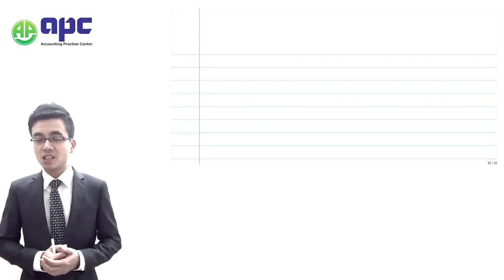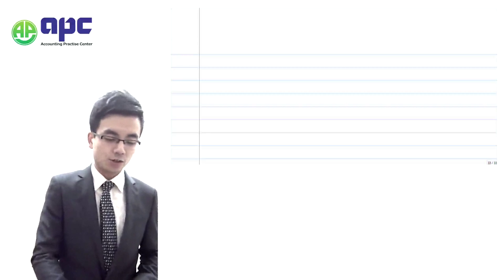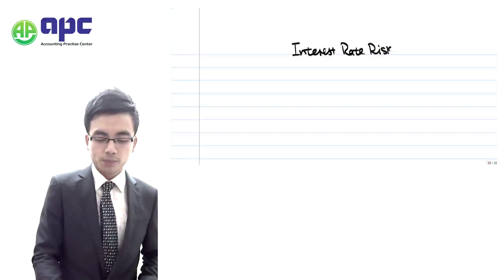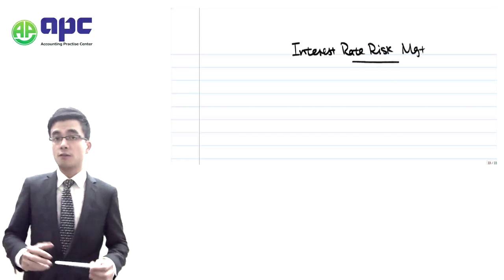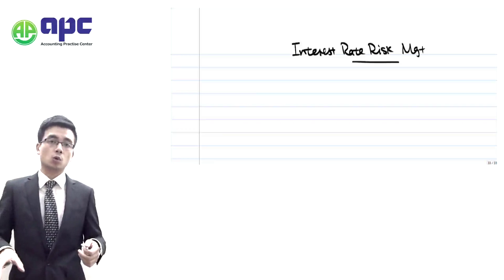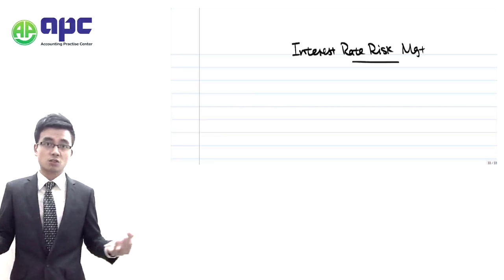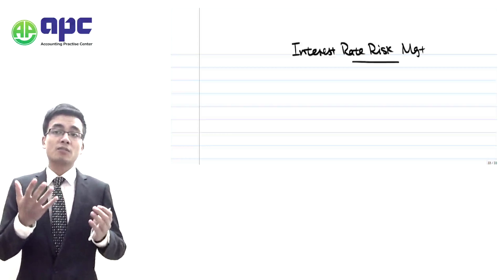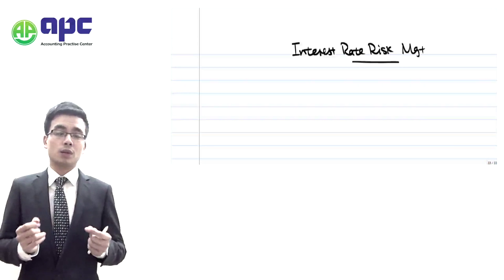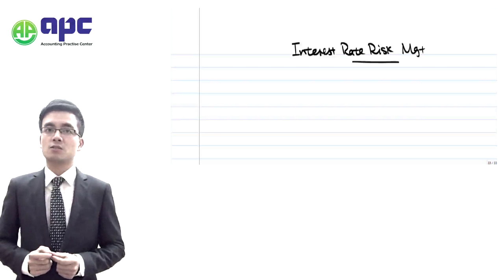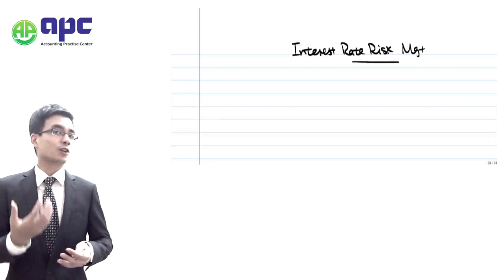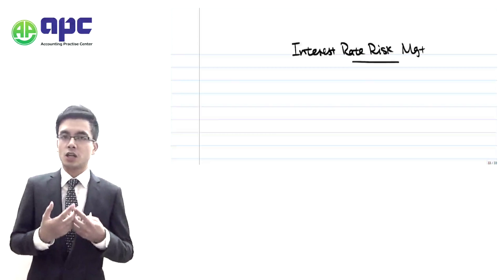Hi, this is Steve from APC. In this video we are going to start looking at the overview of interest rate risk management in the exam. Interest rate risk management is what we think about if the interest rate rises or falls and this will have an impact on the company. For example, if the company is going to borrow money from the bank at 5% but the interest rate rises to 7%, the company will end up spending an extra 2% on borrowing costs and will suffer a loss. So the company needs to think about ways to hedge against those risks.